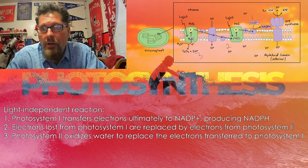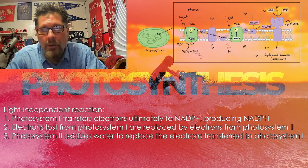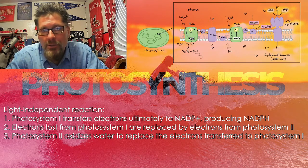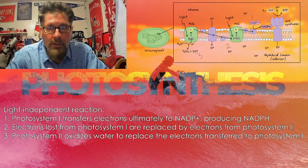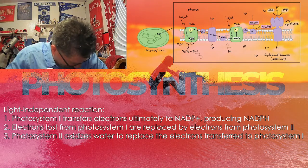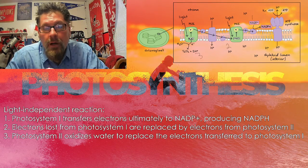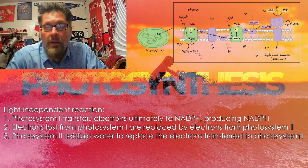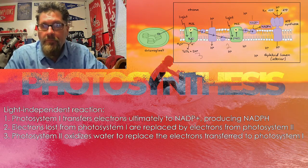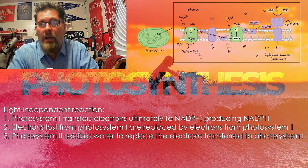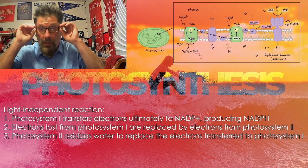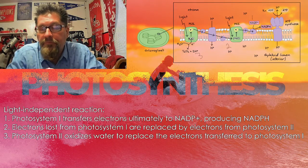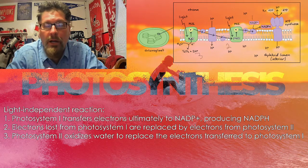The electrons that are lost in photosystem one as they travel to the Calvin cycle get replaced by the electron from photosystem two. So photosystem two's electron eventually gets to photosystem one. Photosystem two, since its electron travels to photosystem one, gets its electrons supplied from water — you can see H2O in the bottom left corner of the diagram next to the green chloroplast, being separated, which means it's being oxidized, and the electron is then supplied to photosystem two.